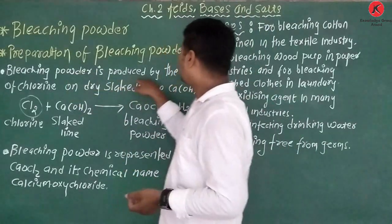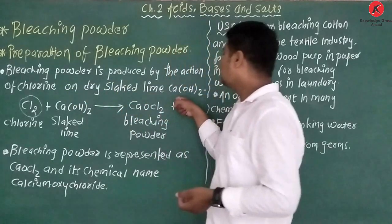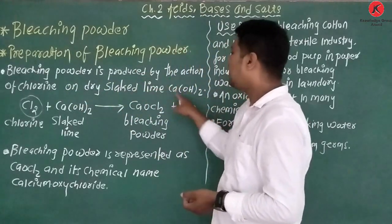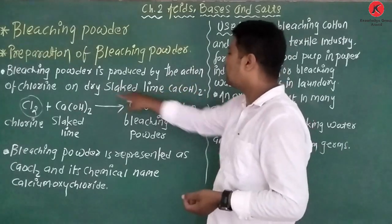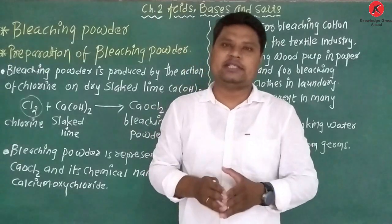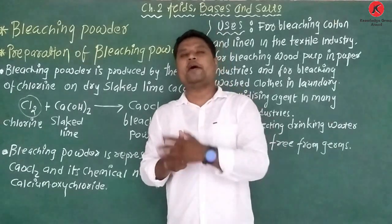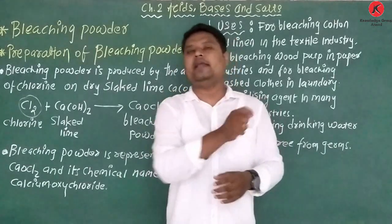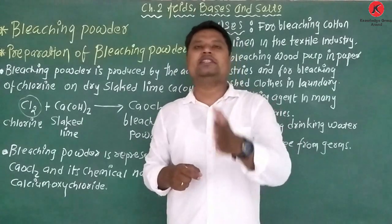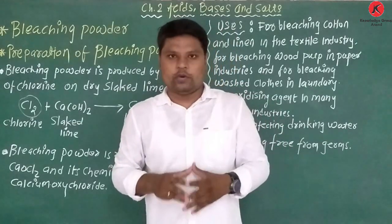Bleaching powder is produced by the action of chlorine on dry slaked lime, Ca(OH)₂. When we have calcium hydroxide and Cl₂, we call it bleaching powder. The chemical name of bleaching powder is calcium oxychloride, which is CaOCl₂ - that is the chemical formula.